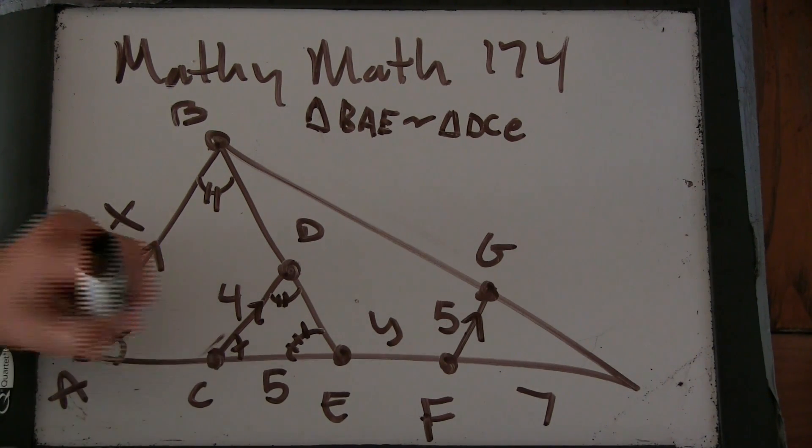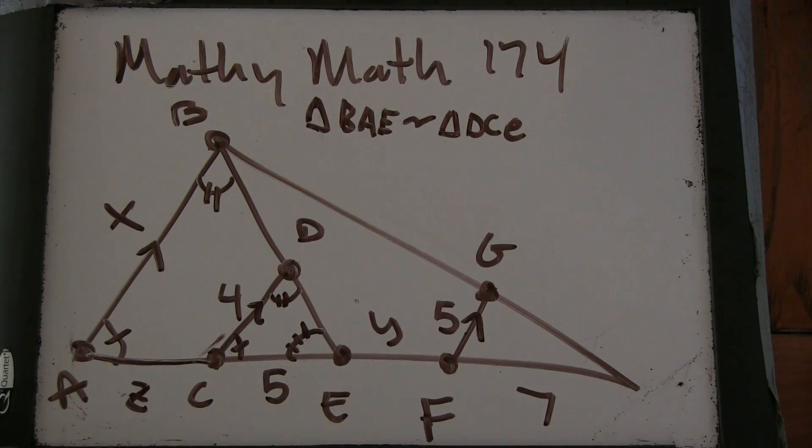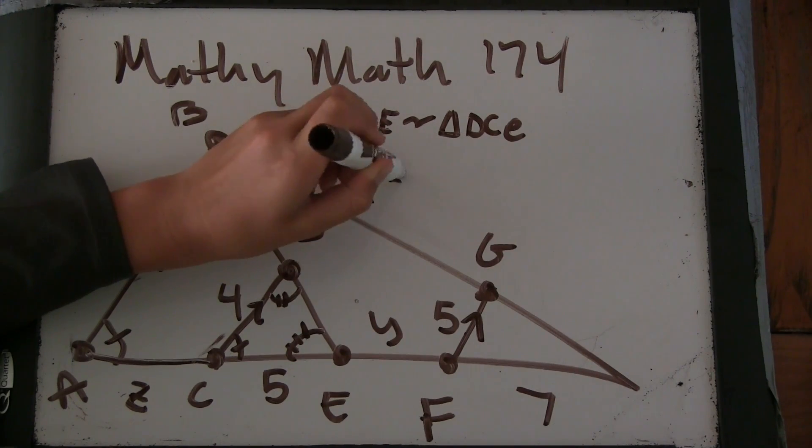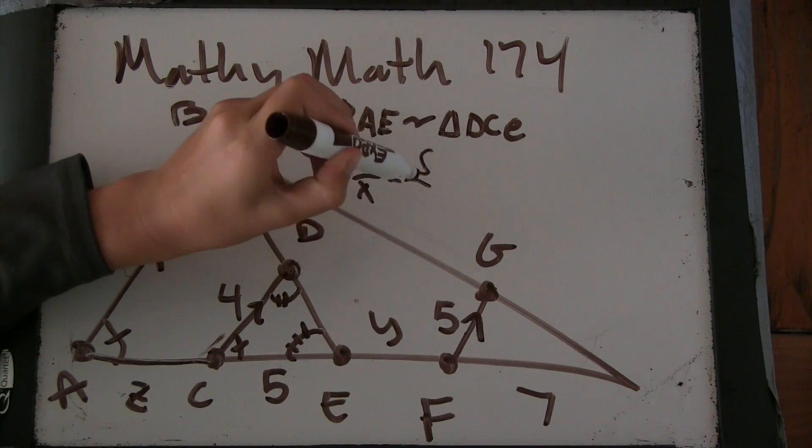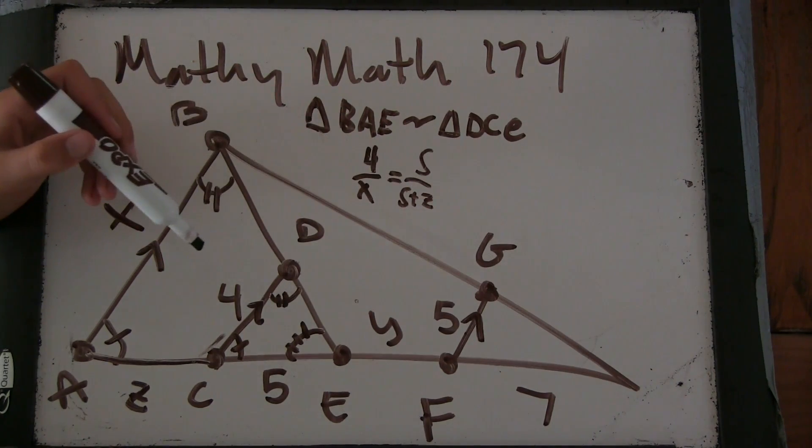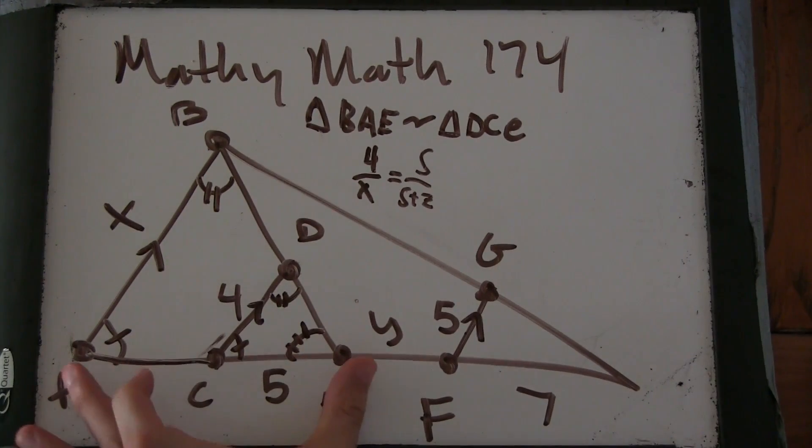I'll call this distance Z? Yeah, AC. Alright. So you can see 4 to X equals 5 to 5 plus Z.